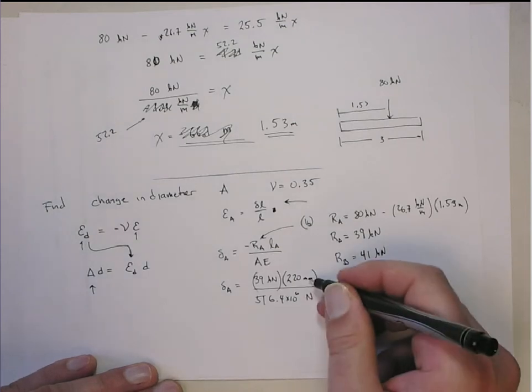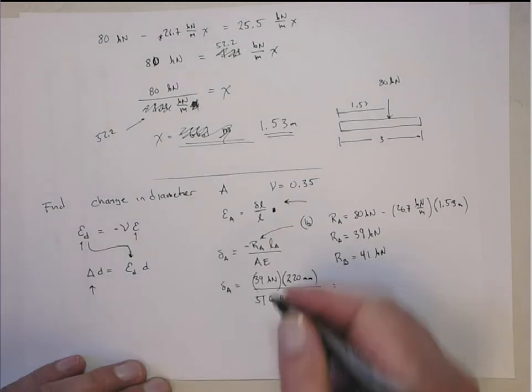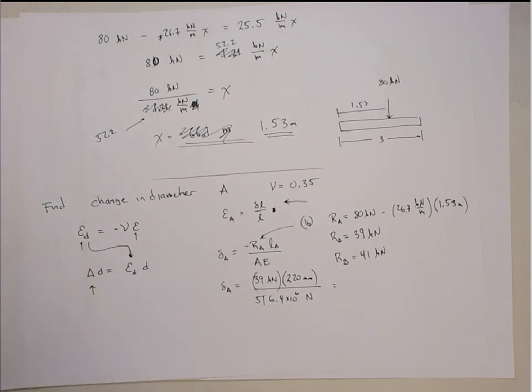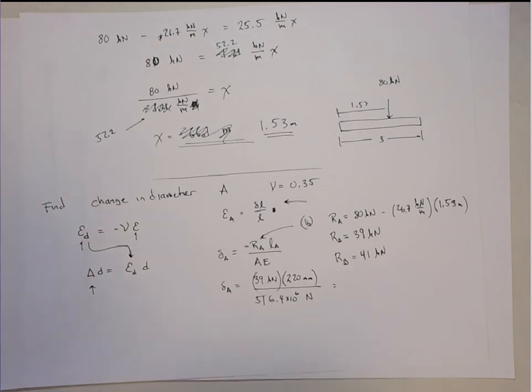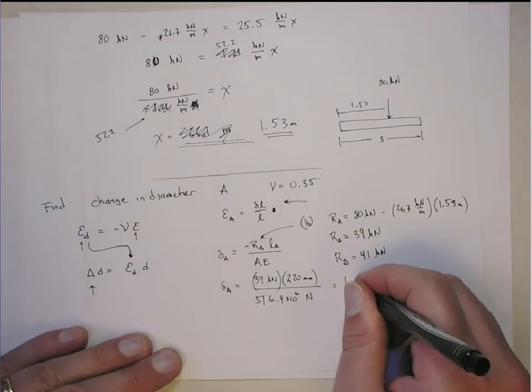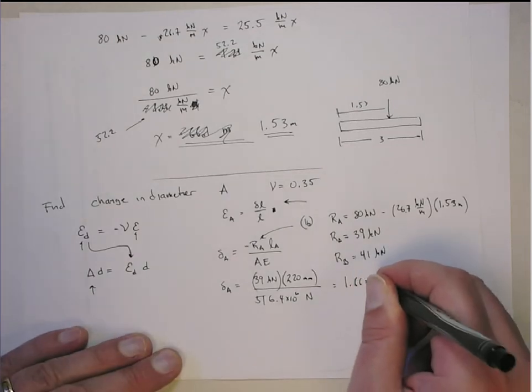The 10 to the minus 3 of the millimeters cancels out with the kilonewtons, so that gives me now 39 times 220 divided by 516.4 times 10 to the 6th. And that gives me 1.66 times 10 to the minus 5.